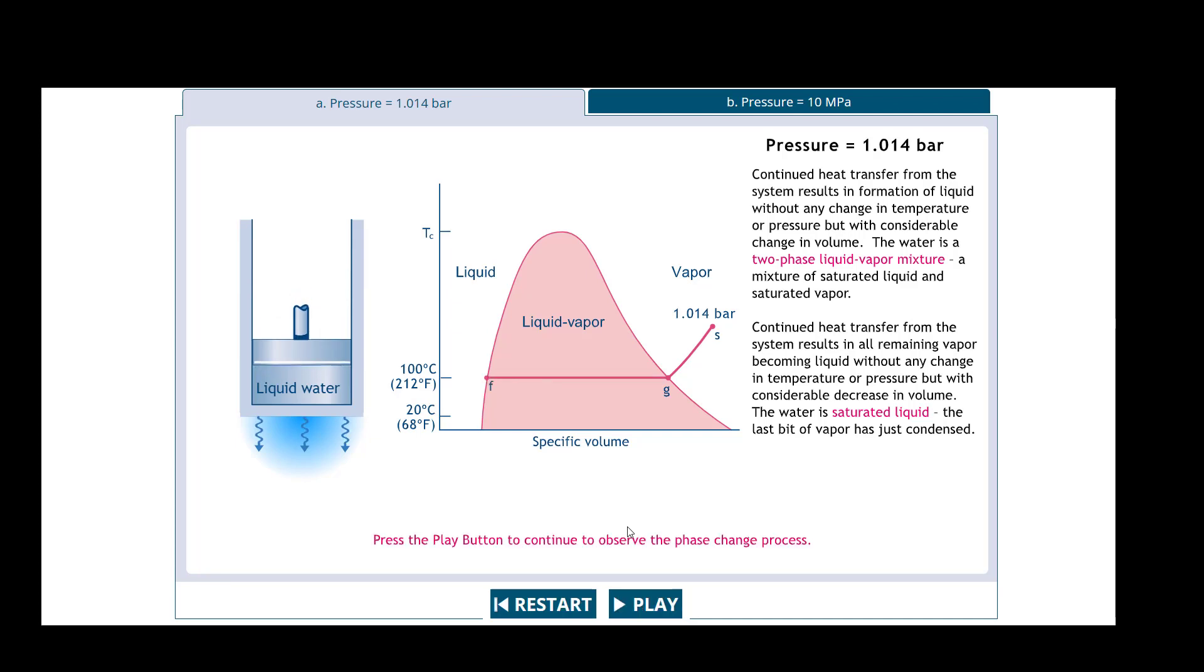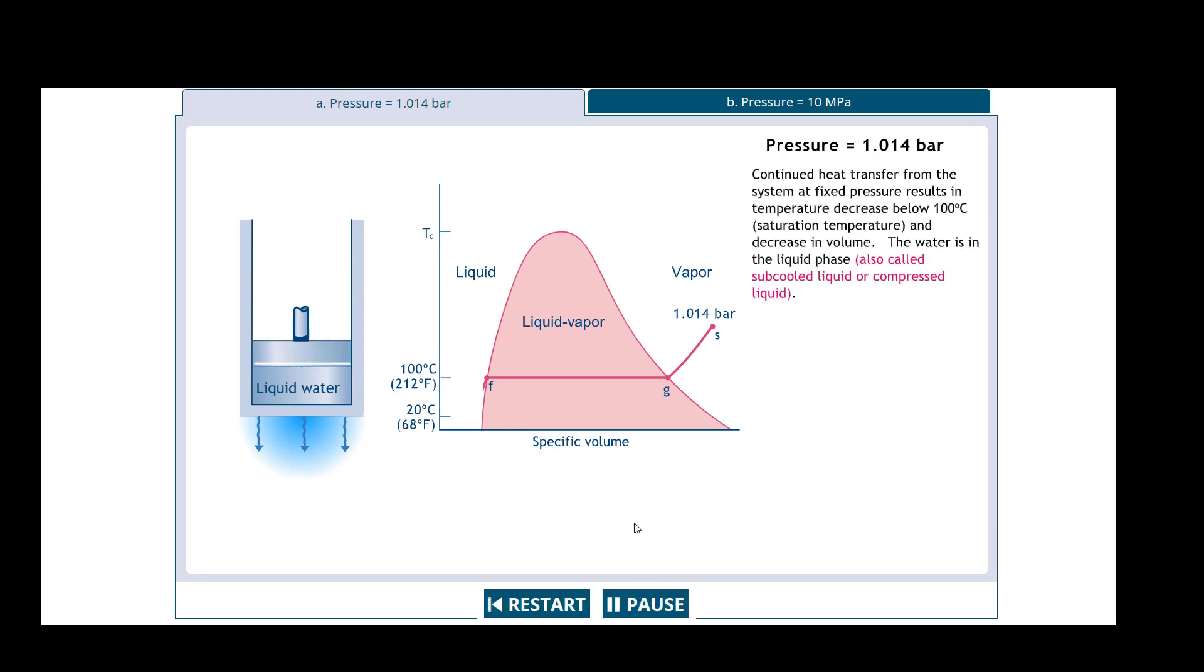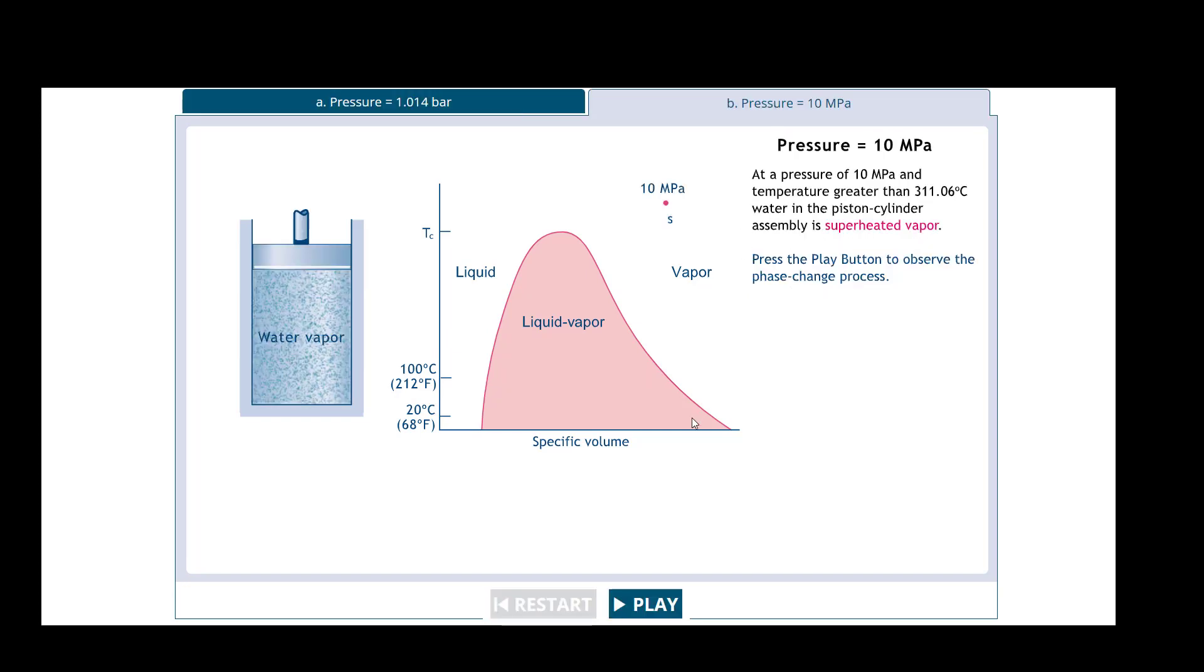When we get to this line our quality will be zero percent vapor, see just like that. Now we cool down again to the compressed liquid. Now let's look at this from a pressure standpoint, from a higher pressure standpoint. We're going to start way up on this chart.